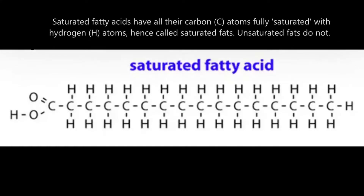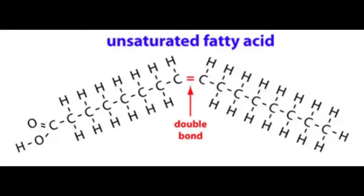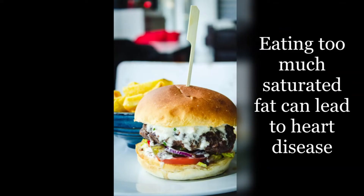Saturated fats contain fatty acids that have all their carbon atoms fully saturated with hydrogen atoms — hence they are called saturated fats. However, unsaturated fats do not. Unsaturated fat is made up of unsaturated fatty acids and they have fewer hydrogen atoms than saturated fatty acids because they have one or more double bonds between carbon atoms.